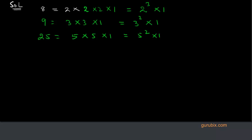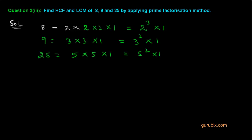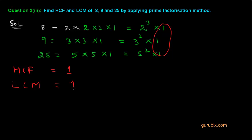Now it is very easy to find out the HCF of these numbers. We clearly see that only 1 is common to all these numbers, so HCF is 1. It is also very easy to find out the LCM because HCF is 1 and the other numbers can be directly multiplied. So LCM is 1800. That is the solution.